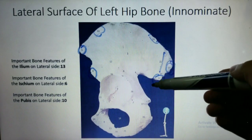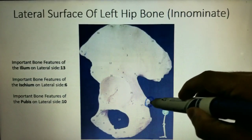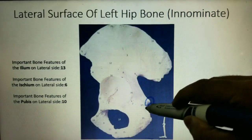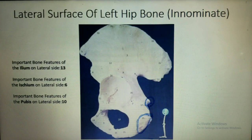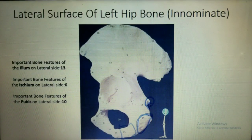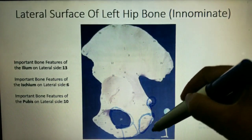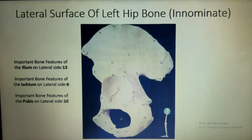Number 3 is the gluteal line. Over here, this is known as the greater sciatic notch. Number 14 is the ischial spine. This over here is the lesser sciatic notch. Number 25 is the ramus of ischium. This foramen here is known as the obturator foramen. This whole part is ischium, and number 7 is the body of ischium — which I consider the sixth feature.